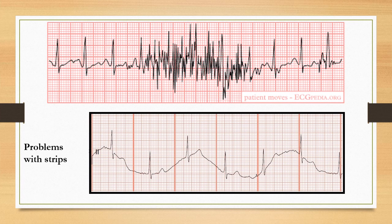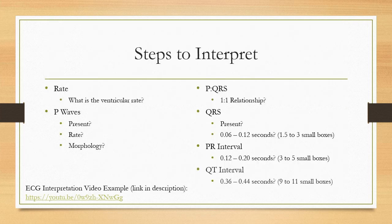Two common problems with ECG strips are artifact and wandering baseline. Artifact or interference can result from patient movement, tremor, improper equipment grounding, or interference from other electronic equipment. A wandering baseline is caused by chest wall movement during respiration or poor lead placement, and can also result from dirty or oily skin, hair under the electrode, or a dried-out electrode that is not conducting properly.